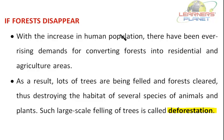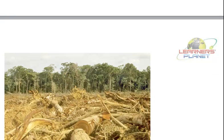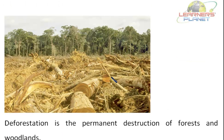Such large-scale felling of trees is called deforestation, which is actually a matter of concern. Deforestation is the permanent destruction of forests and woodlands. Here you can see the picture of deforestation — deforestation means there is large-scale cutting of trees, and this is the permanent destruction of forests and woodlands.